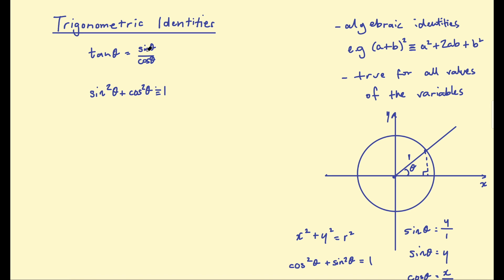Tan theta equals sine theta over cosine theta. If we took the tan of this angle, it would be the opposite over the adjacent side. The opposite side is the y value, which we said is sine theta. The adjacent side is the x value, which we said is cosine theta. So you can use the unit circle to prove that tan theta equals sine theta over cosine theta. Those are two of the most well-known identities.